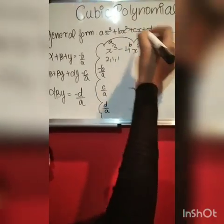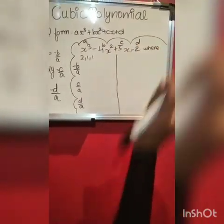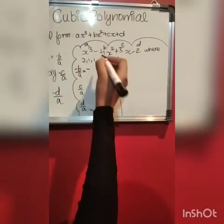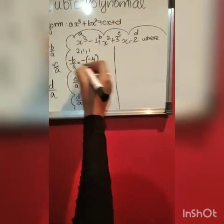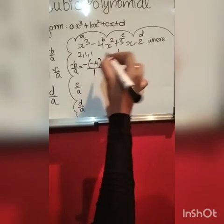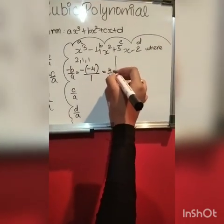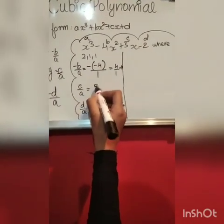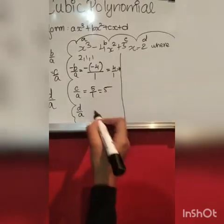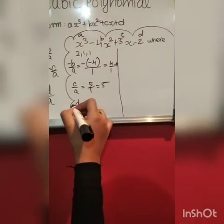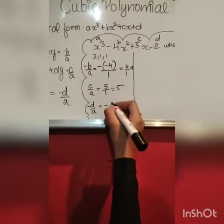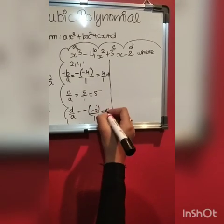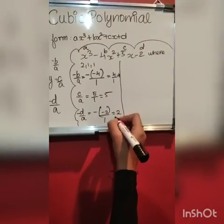In this cubic polynomial, b is the coefficient of x², which is 4x², so b equals 4. c is 5 from 5x, and d is minus 2. So minus b by a: b is minus 4 and a is 1, and minus into minus is plus, so 4 by 1 which is 4. Now c by a: c is 5, so 5 by 1 equals 5. And minus d by a: d is minus 2, so minus times minus 2 by 1 gives plus 2.